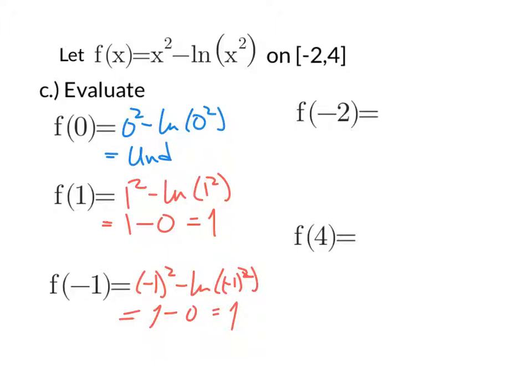So I'm just going to take negative 2 and plug it in. Negative 2 squared minus the natural log of negative 2 squared gives us 4 minus the natural log of 4. Grabbing the calculator and typing that in there, we'll get 2.613.